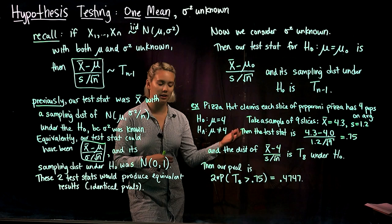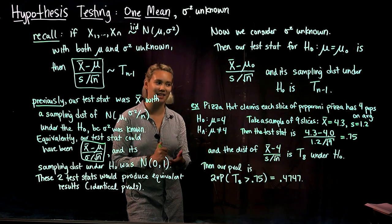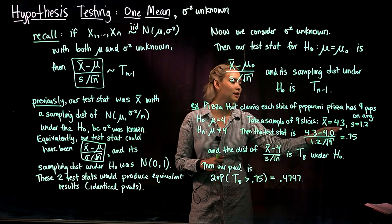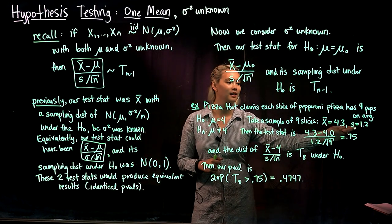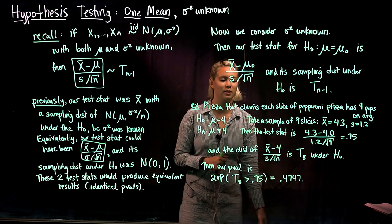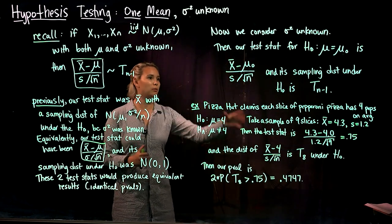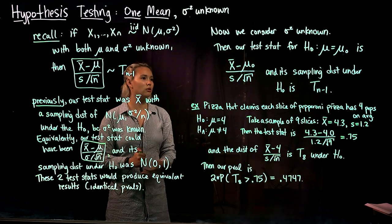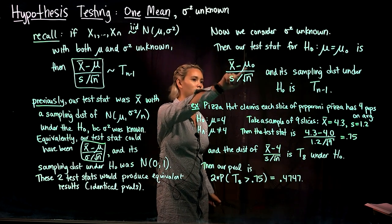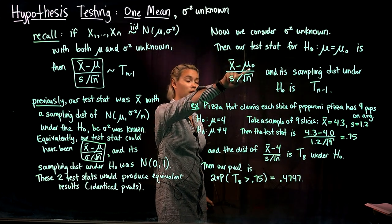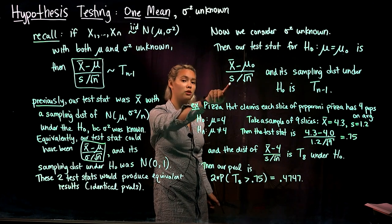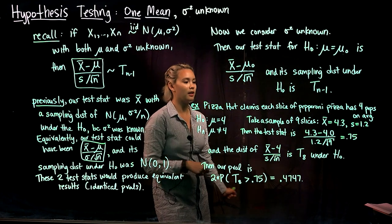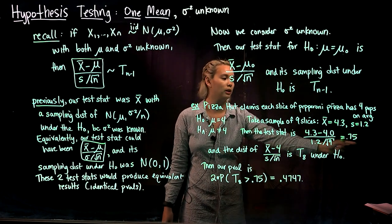Say you randomly sample nine slices of pizza, so n equals nine. You calculate x bar and find it is 4.3 slices of pepperoni, and the sample standard deviation s is 1.2 slices of pepperoni. Plugging these into the test statistic formula: x bar minus mu naught is 4.3 minus 4, divided by s over root n, which is 1.2 over root nine. Our test statistic is equal to 0.75.